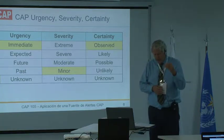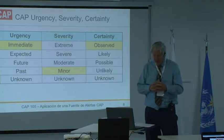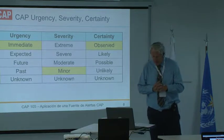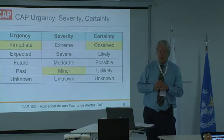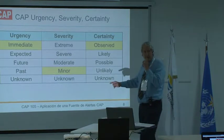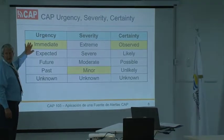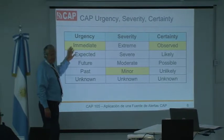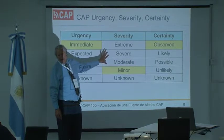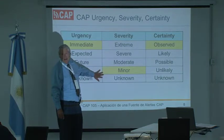For severity, we have extreme — an extraordinary threat; severe — a significant threat; moderate — a possible threat; or minor — minimal to no known threat. In the particular case of a power outage, what do we choose for urgency? Well, the power outage has already started — it has failed — so it's immediate. For severity, it's conceivable people could die in a power failure, but that's not usual. It's really minor severity.